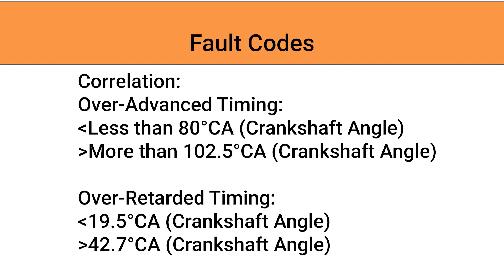A fault for cam crank position correlation can set when the ECM checks the learning value at idle. Learning value is a calibration based on cam and crank position. At idle, intake valve timing is set to the fully retarded position and exhaust camshaft timing is set to the most advanced angle. If the learn value at idle is out of spec, a fault code is set.